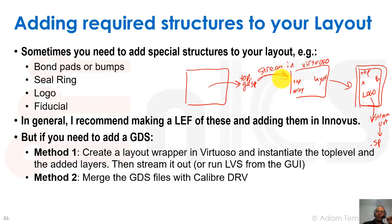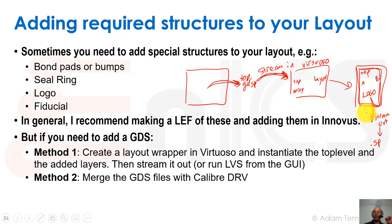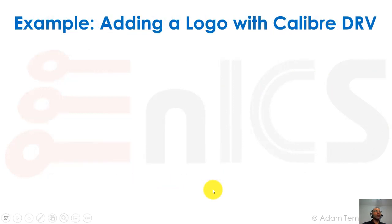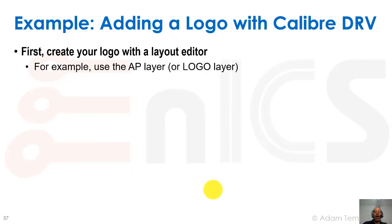Every time we create a new stream out from a new version of our GDS, we stream it in again and it will automatically be updated inside our wrapper so we can stream it out again. But that's a tedious flow and not well scripted. A better way is to merge the GDS files with Calibre DRV — that's what I more recommend. Let's show how to do that with Calibre DRV, using adding a logo as an example.